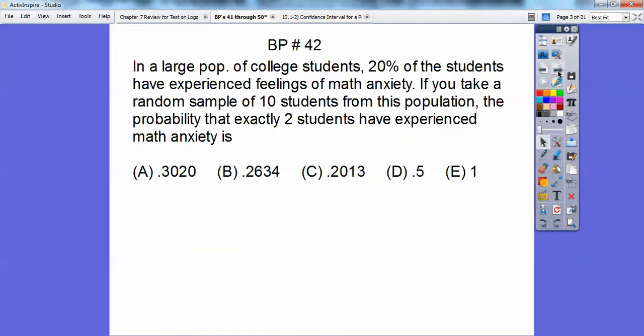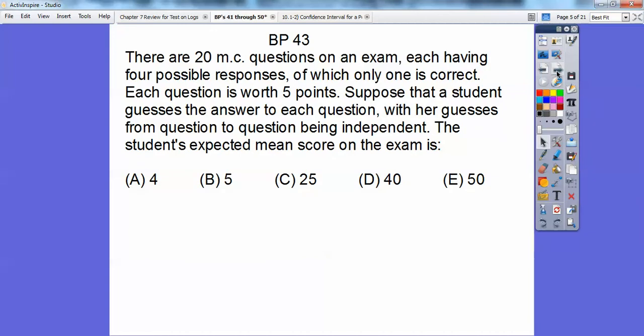In a large population of college students, 20% of the students have experienced feelings of math anxiety. If you take a random sample of 10 students from this population, the probability that exactly two students have experienced math anxiety is, okay, this is a binomial distribution. And since it said exactly, you can just plug it in your calculator, binomial PDF when it said exactly. If it said two or less than or at most two, then that would be a CDF or cumulative, but this one's a PDF. So 10 and then the probability and how many you're going to do. And when you do that, you punch that in and you get the closest one is choice A.